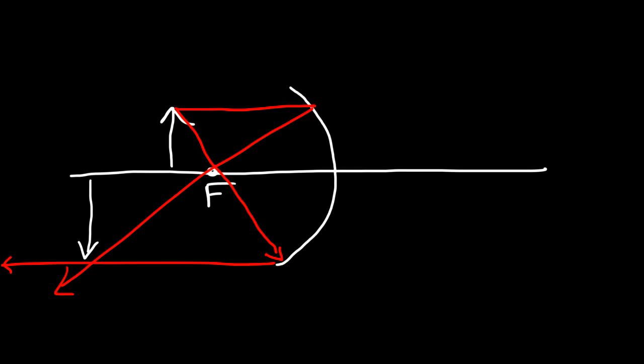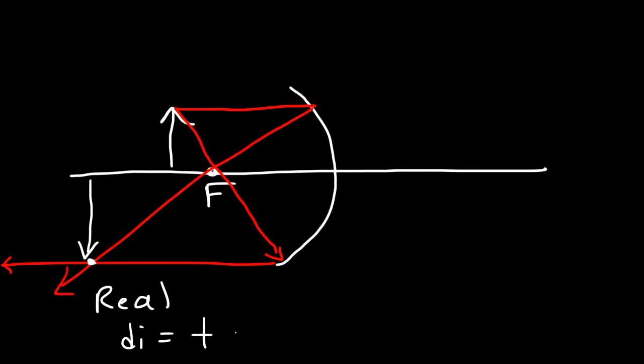So what type of image do we have? Would you say this is a real image or a virtual image? Because the light rays actually converge at this point, we have a real image. The distance between the image and the mirror is known as DI. For a spherical mirror, DI is positive when the image is on the left, and negative when it's on the other side. Whenever DI is positive, you have a real image.